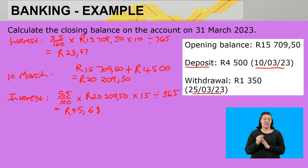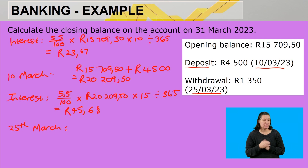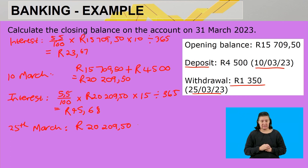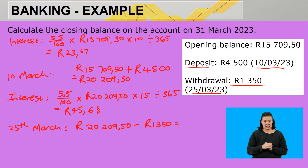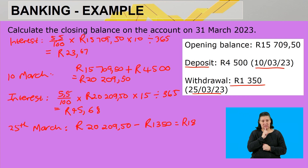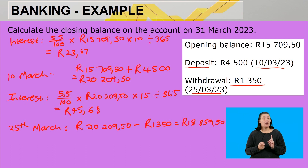On the 25th of March there is a withdrawal. At this point the balance is R20,209.50, but R1,350 is taken out of the account. So I subtract R1,350 because it's a withdrawal: R20,209.50 minus R1,350 gives a new balance of eighteen thousand eight hundred and fifty-nine rand and fifty cents.